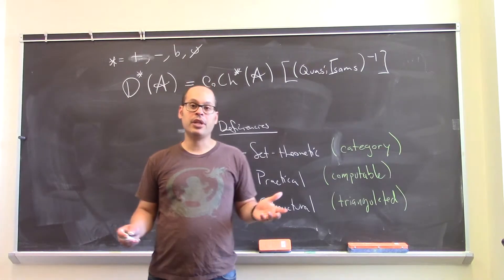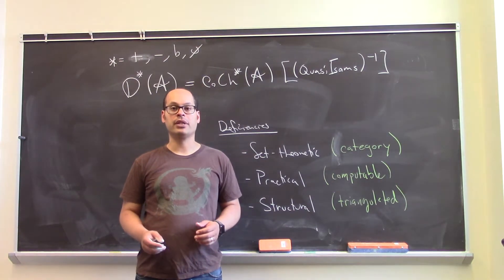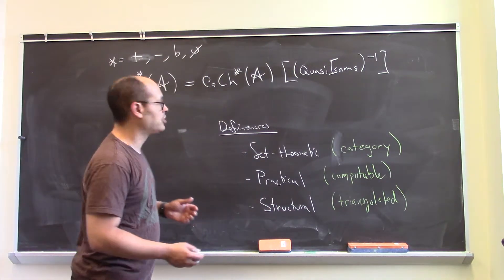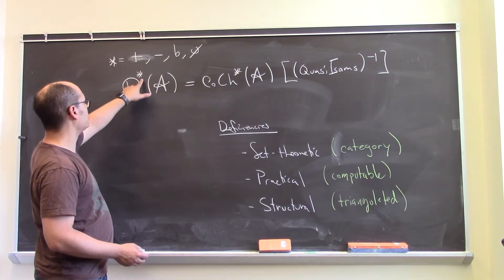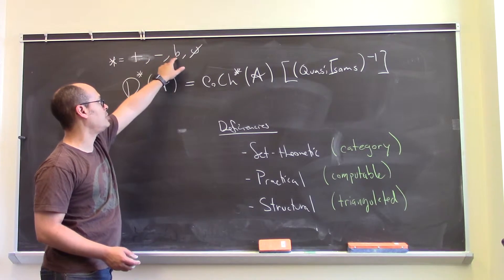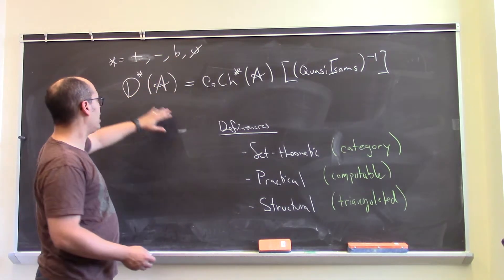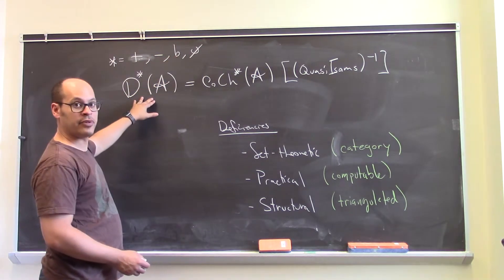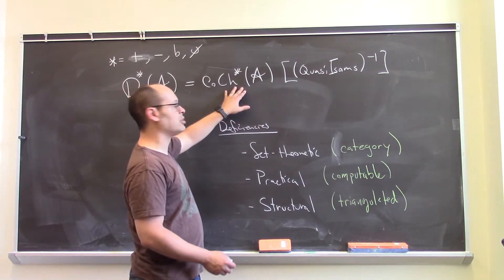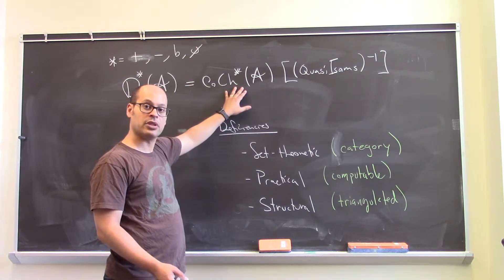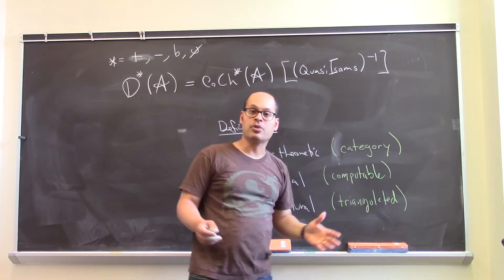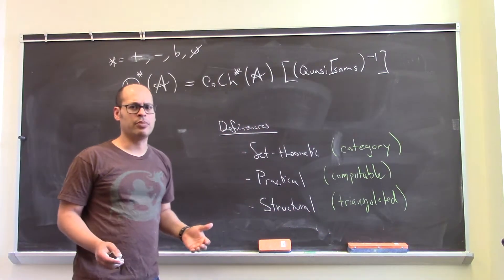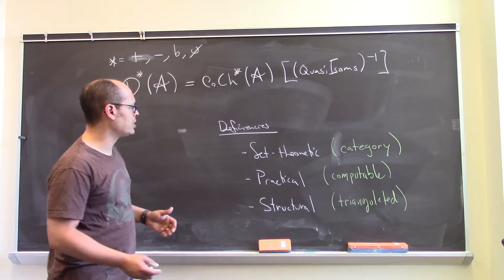So now that we know what it means to localize a category and we know what the quasi-isomorphisms are, we can say what the derived category is in general. So it comes in these different flavors. Here a star can be plus, minus, b, or just nothing. And in either of these cases, that flavor of the derived category is what happens when you take that flavor of the category of cochain complexes, and you invert the quasi-isomorphisms. So this is great, this is fine, but it's also problematic.